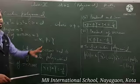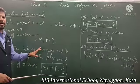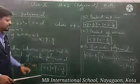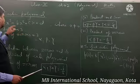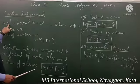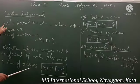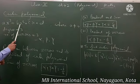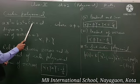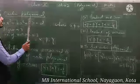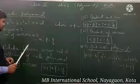Zeros hain alpha, beta, gamma — teesre wale hote hain. Aur coefficient kya hai: x³ ka coefficient a, x² ka coefficient b, x ka coefficient c, aur d constant hai.